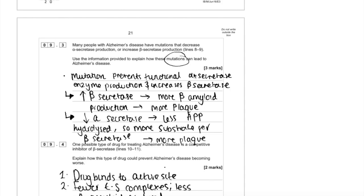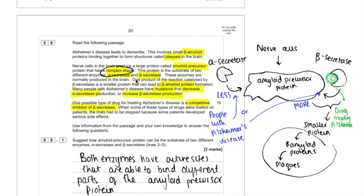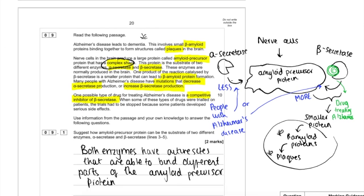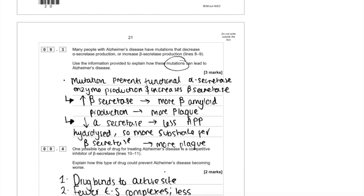You don't need to know the details of how that might happen, but just relate the gene mutation to the protein. What really helps here is looking at our diagram. The most obvious one to start with is beta secretase. If there's more beta secretase production, we can straight away see from visualizing it here that you're going to have more beta amyloid proteins and therefore more plaques, which is what causes Alzheimer's disease. I've written: more beta secretase, more beta amyloid production, more plaque.